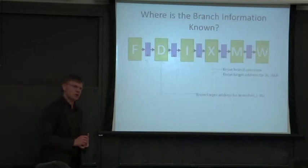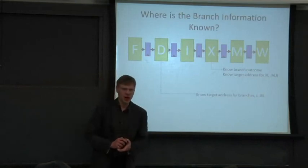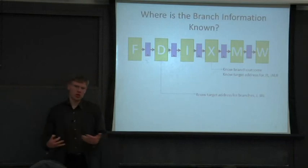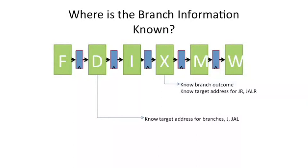Okay, so this is a bit more review from lecture two. We talked about figuring out where we can resolve a branch. Here's a longer pipe: one, two, three, four, five, six - six stages. It's not quite our five-stage pipe; I put an issue stage in here.